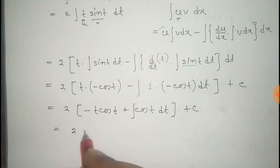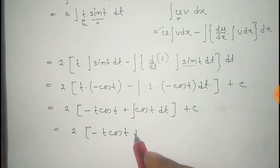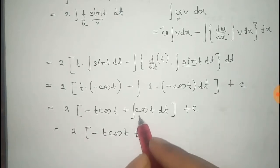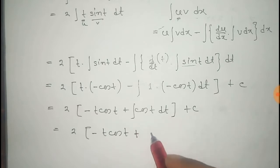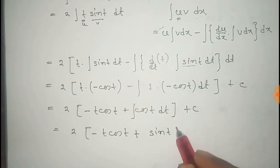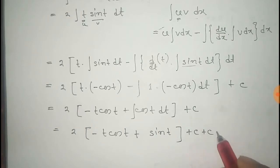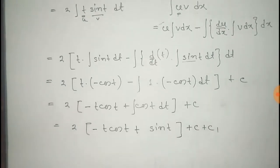Now this is equal to 2 times [−t·cos(t) plus sin(t)], since the integral of cos(t) dt is sin(t). There will be another constant, C₁.